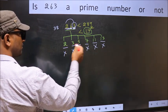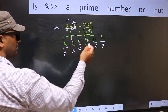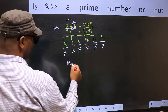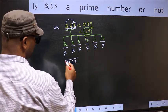So, 263 is not divisible by any of these numbers. Hence, 263 is a prime number.